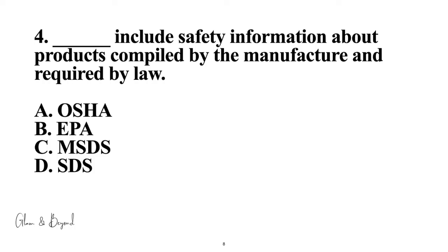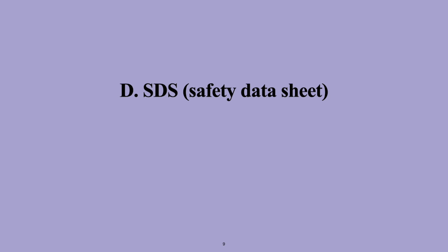Number four: blank include safety information about products compiled by the manufacturer and required by law. A, OSHA; B, EPA; C, MSDS; D, SDS. The answer is D, SDS, also known as safety data sheet.